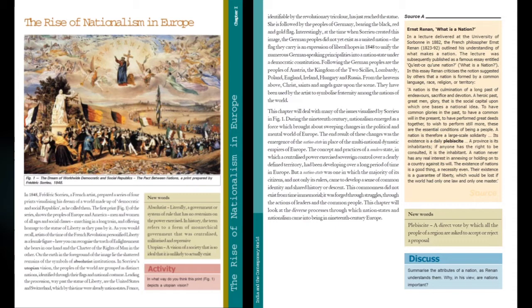In Soro's utopian vision, the peoples of the world are grouped as distinct nations identified through their flags and national costumes. According to him there is no caste, creed, racism, or class — only the nation. People will be identified through their flags and national costumes. Leading the procession past the Statue of Liberty are the United States and Switzerland, which by this time were already nation-states.